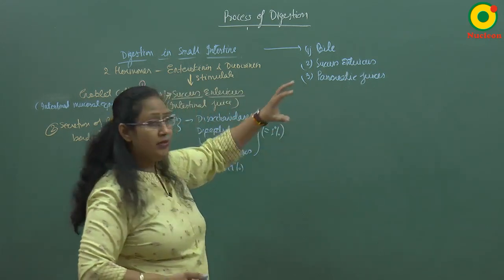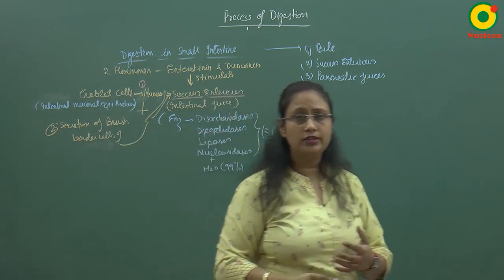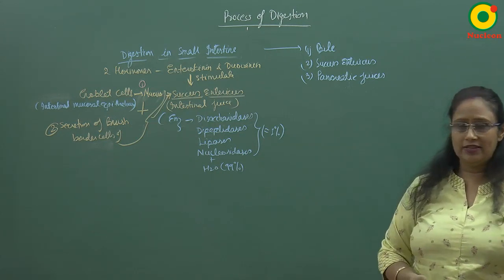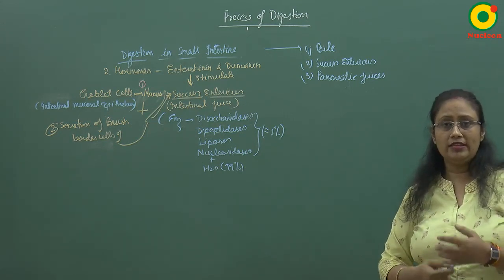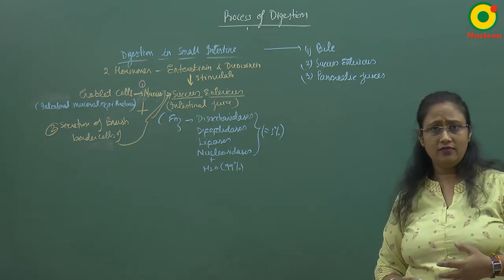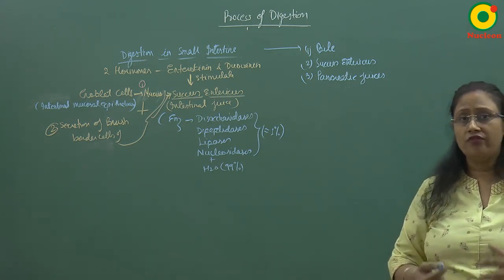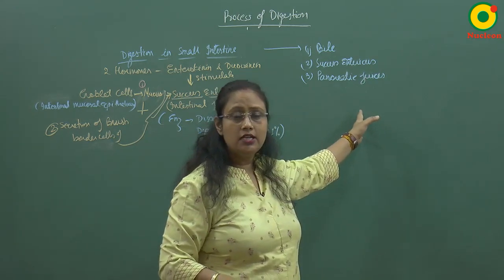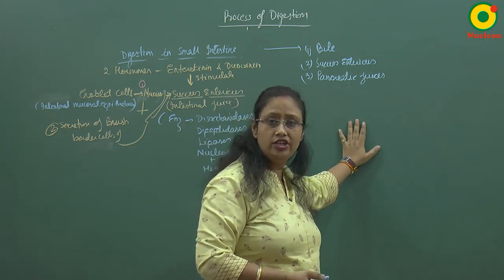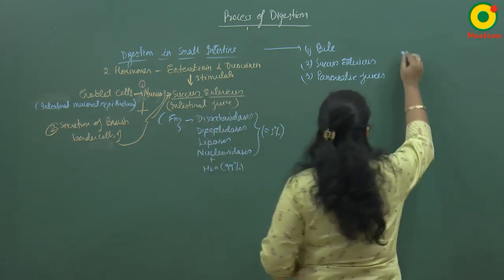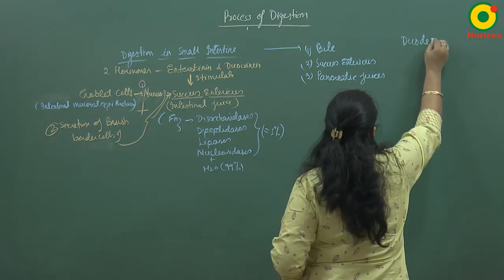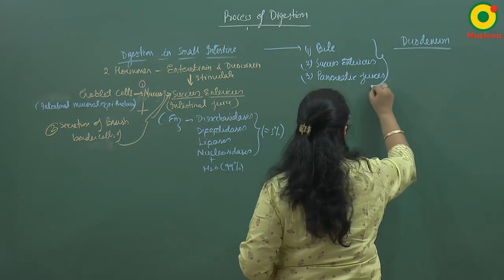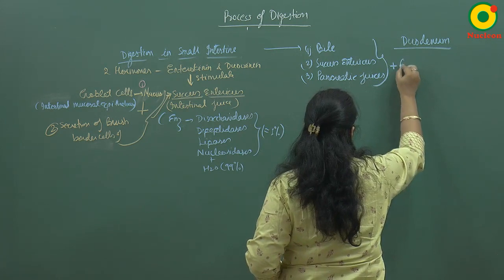So these three — bile, succus entericus, and pancreatic juice — are mixed with the chyme. The peristaltic movement occurring in the muscular layer of the intestinal wall helps in the mixing of chyme with these juices, especially in the duodenum region of the small intestine.